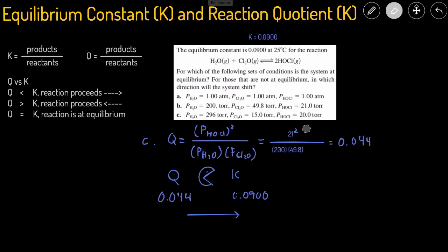All right, now let's take a look at C. So for C, the pressure of the product was 20, and we got to raise it to the second power, because we got to carry this 2 over, divided by the pressure of the reactants, 296 times 15. And then that gives us 0.0900.